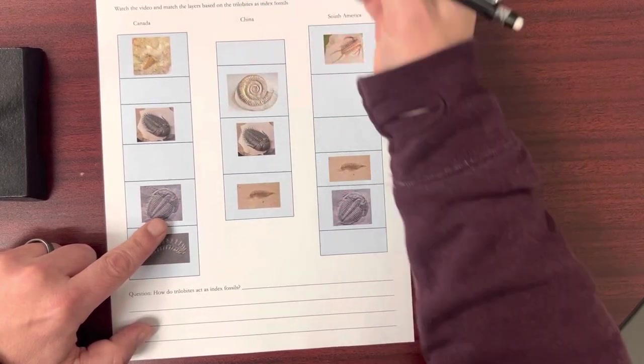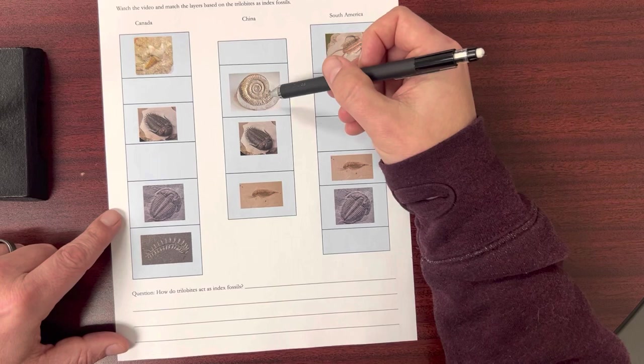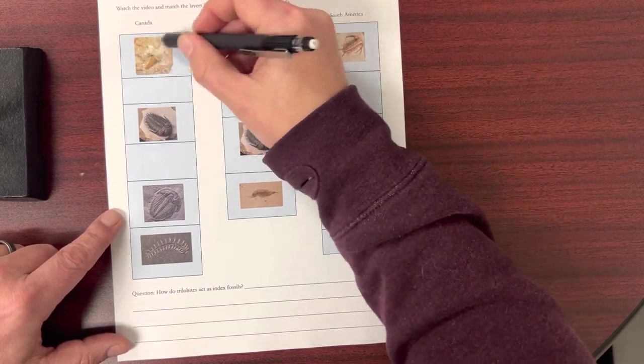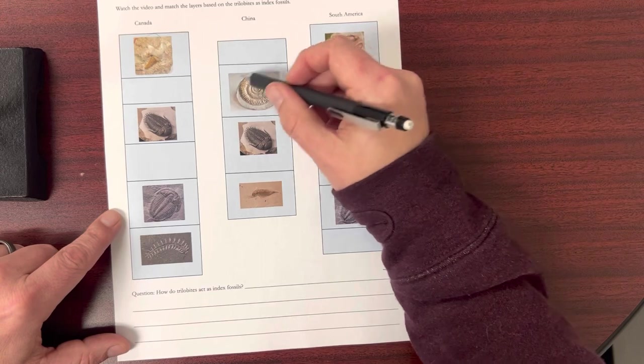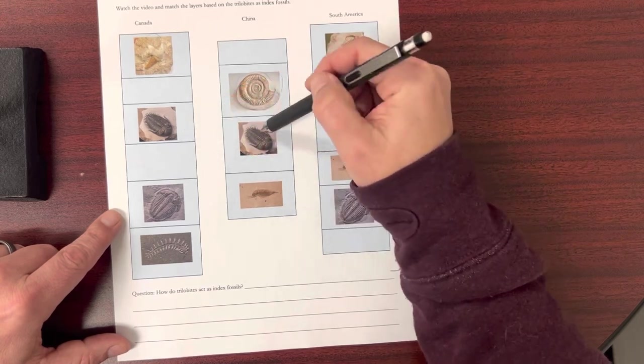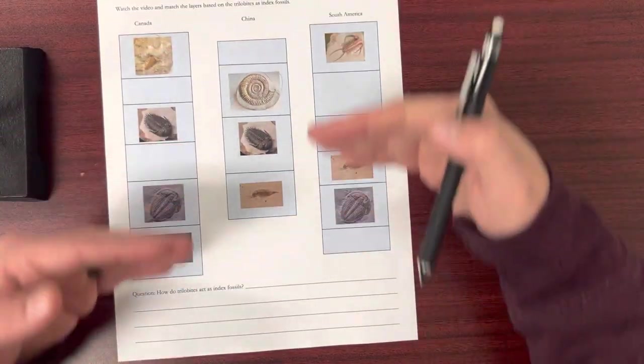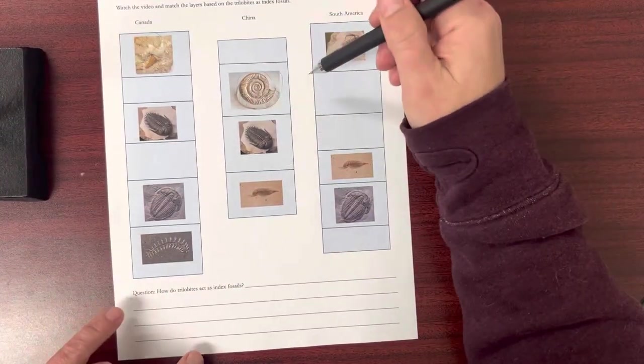And index fossils let you figure out the place of these other fossils. So for instance, I've got a shark tooth and I've got an ammonite. Well, using our index fossils, our trilobites, we can get a relative age of where these other fossils are found.